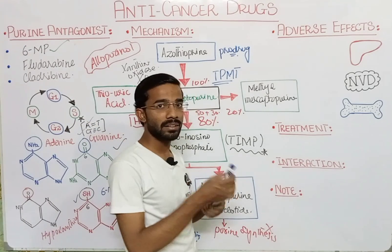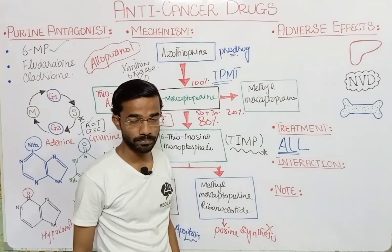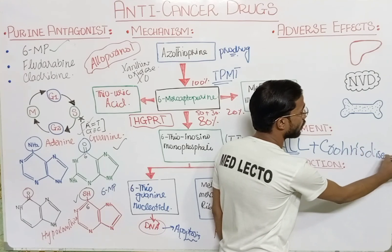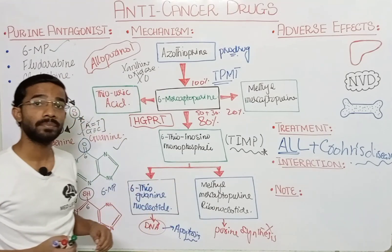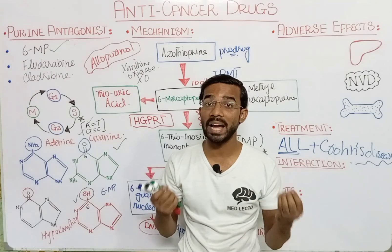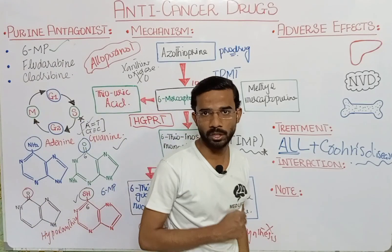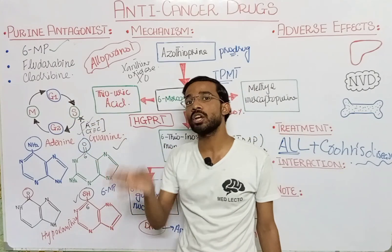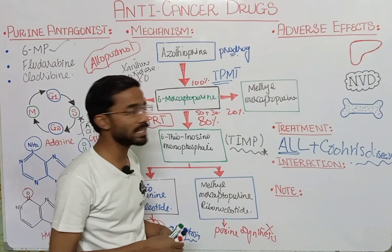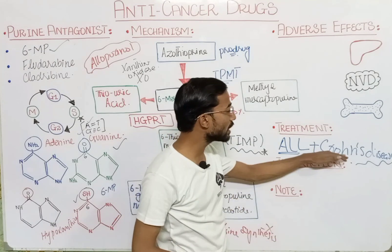6-Mercaptopurine is most important in ALL — acute lymphoblastic leukemia. It is also used in Crohn's disease, which is an inflammatory bowel disease caused by the immune system. If I suppress the immune system by blocking T-cells and B-cells via cell cycle blockade, then I can treat Crohn's disease, since the immune system cannot attack the GIT tract.